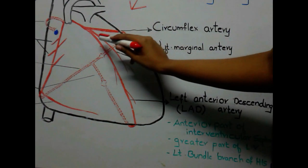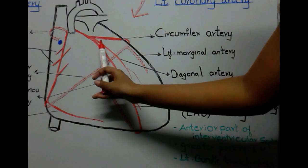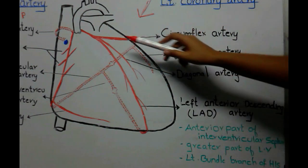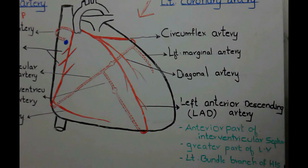In between these two, another branch is given. This artery divides the angle formed by circumflex artery and LAD. So it is termed as diagonal artery.